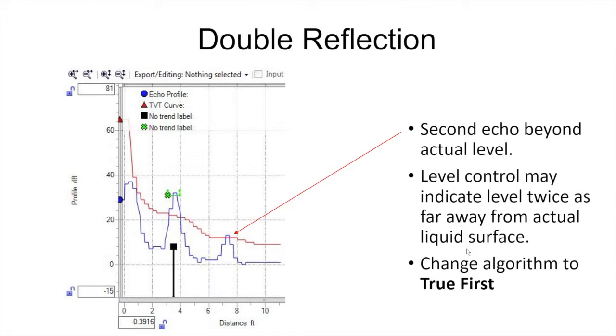Generally the second echo would be the only one to worry about, but if the second echo is in some cases stronger than the first echo, the true echo, then the radar gauge would indicate the level as being twice as far away from the radar sensor face as it actually is. In this case we definitely want to make our algorithm true first so it selects only the first valid echo.